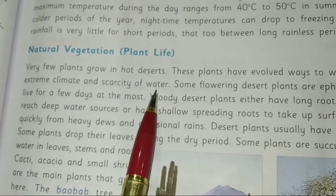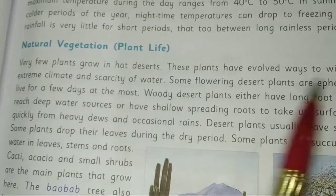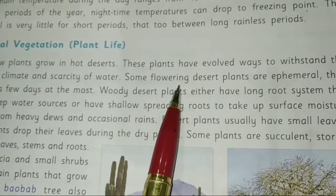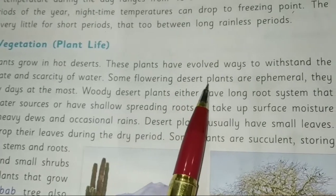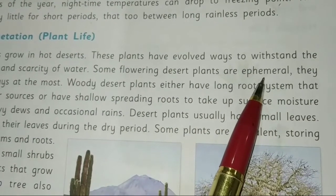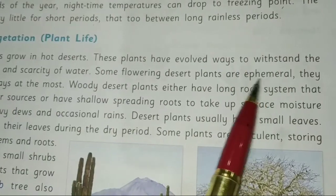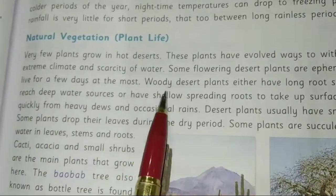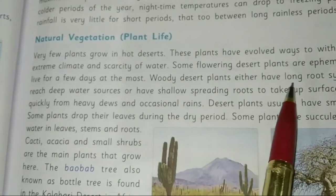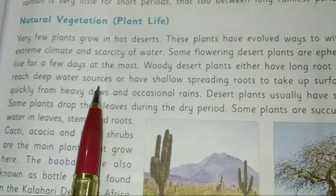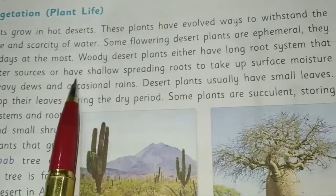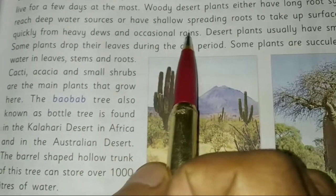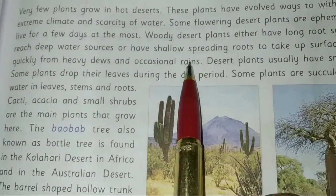Very few plants grow in hot deserts. These plants have evolved ways to withstand the extreme climate and scarcity of water. Some ephemeral plants complete their life cycle in just a few days. Woody desert plants have long root systems that reach deep water sources, and shallow spreading roots to take up surface moisture quickly from heavy dew and occasional rains.